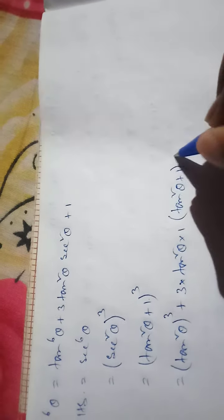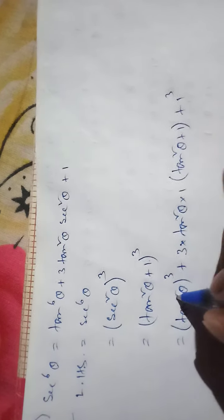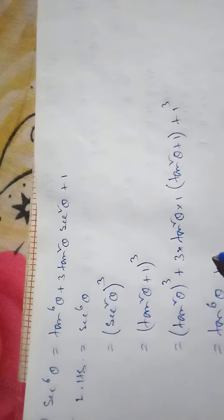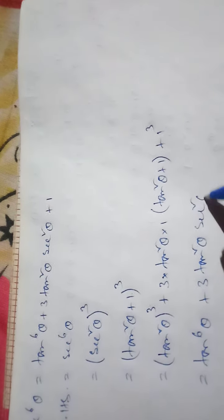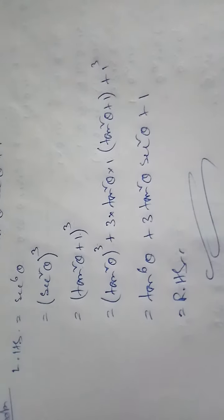So sec⁶θ = (tan²θ + 1)³. Using the identity (a + b)³ = a³ + 3a²b + 3ab² + b³, with a = tan²θ and b = 1: we get tan⁶θ + 3tan⁴θ·1 + 3tan²θ·1 + 1. Since sec²θ = tan²θ + 1, the middle terms give 3tan²θ·sec²θ, and this equals the right-hand side.